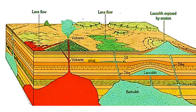Igneous rocks are formed in different shapes inside the Earth, and these different shapes are known by different names: batholiths, lacoliths, sills, dykes, necks, etc.